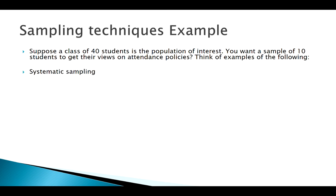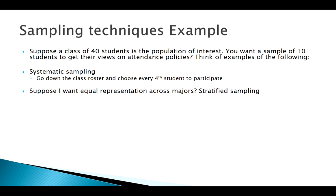What would be an example of systematic sampling? If I have a sampling frame of all 40 students on a class roster and I just went down the list and picked every fourth student, that would be one way of incorporating randomization into my sample — though maybe not a perfect one.